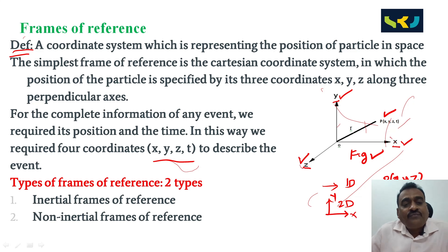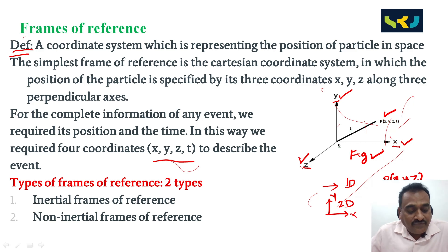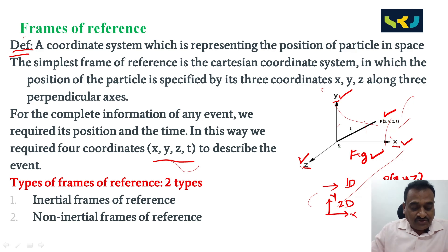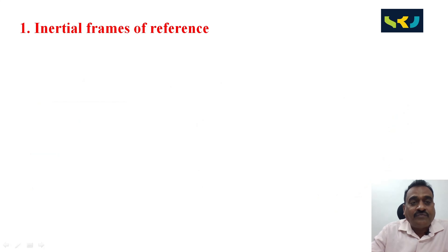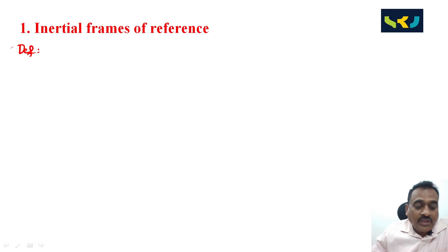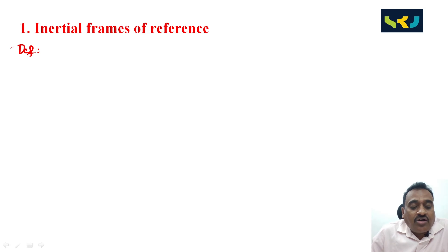There are two types of frames of reference: one is the inertial frame of reference, and the second is the non-inertial frame of reference. What is an inertial frame of reference? A frame of reference that obeys Newton's law of inertia — Newton's first law, second law, and third law — is called an inertial frame of reference.